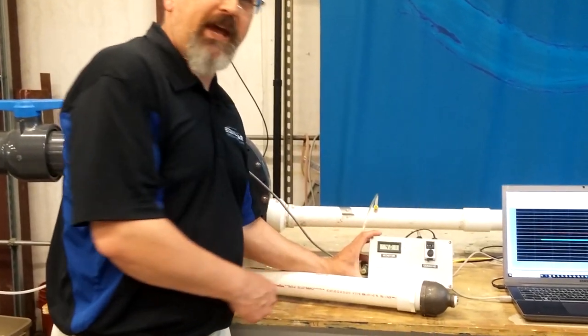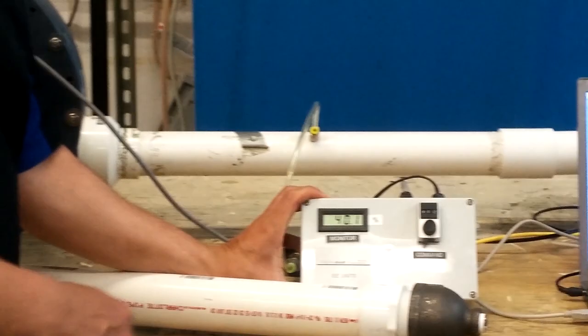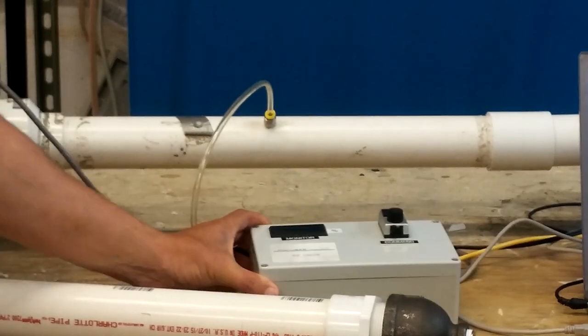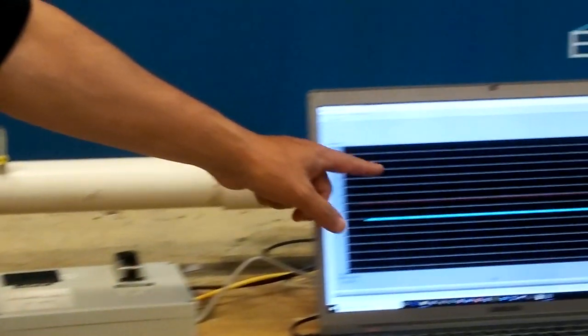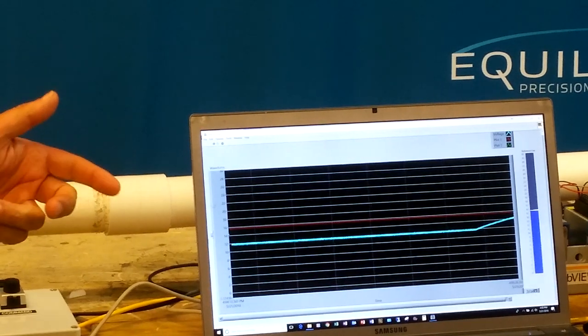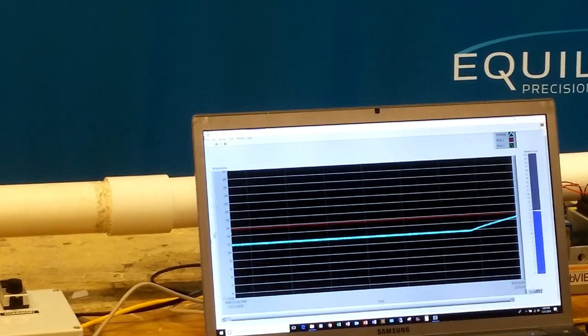Let's change the command again from 40% up to 50%. And if we take a look at the chart recorder, we're going to see that it takes a lot more time to change the set point pressure.